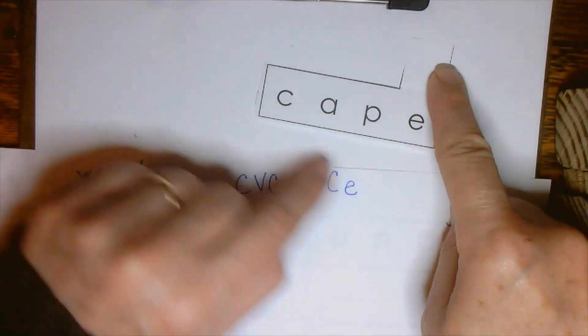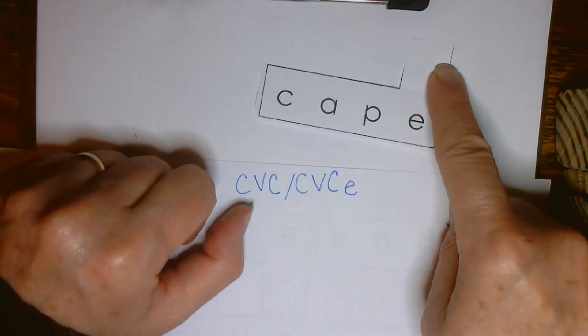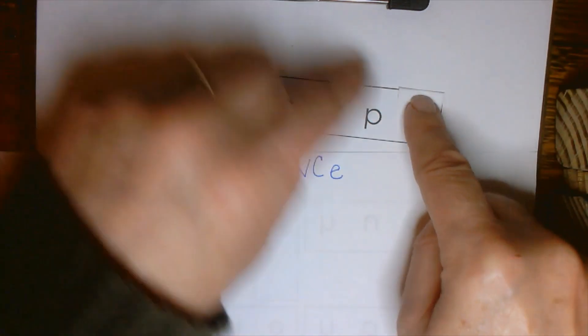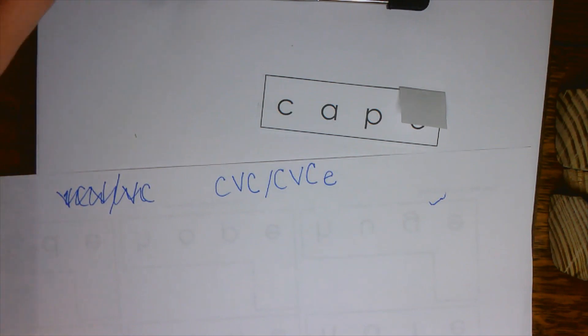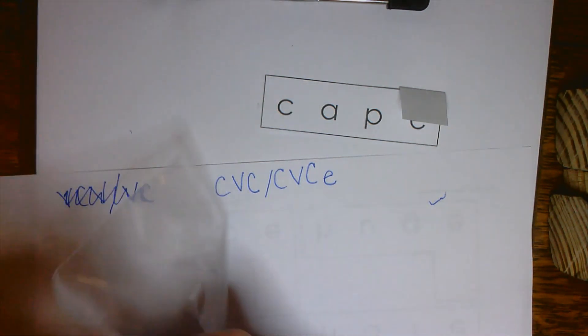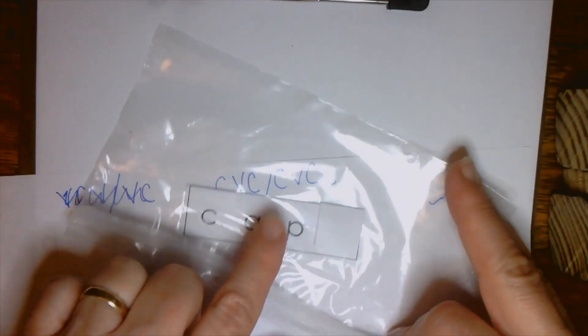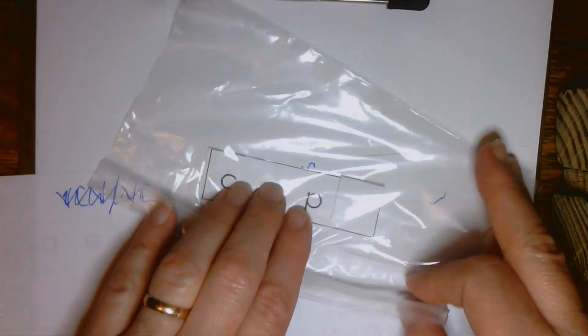So, you have vowel, consonant, silent e, or a magic e. So, boys and girls, you're going to cut each of those apart, and then once they're all cut apart, or maybe one at a time as you cut them apart, read them, and then you can store them in your bag, because you're going to be reading these several times this week. It's not just going to be for today.